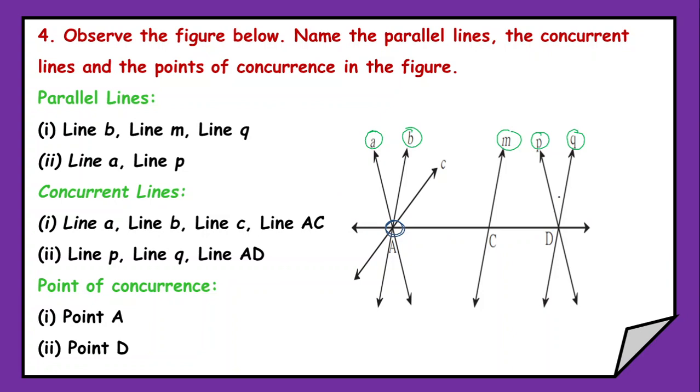Now in the next set, I am able to find line P, Q and this line AD. They are passing from the single point D. So even they are supposed to be the concurrent lines. Now what is the point of concurrence? From where the concurrent lines are emerging, that point is point of concurrence. So here we have point A and point D.